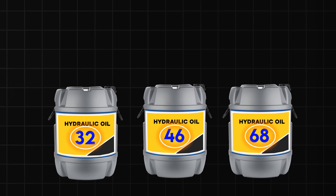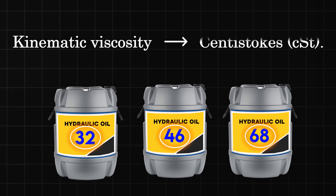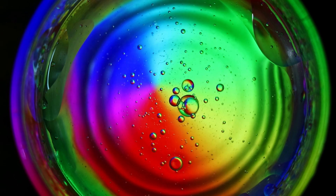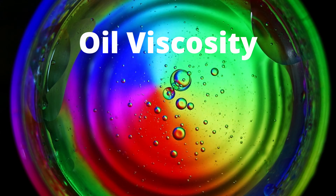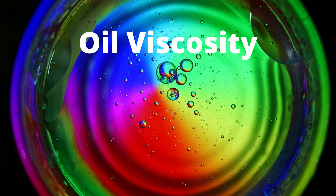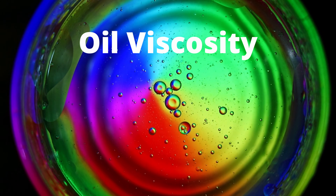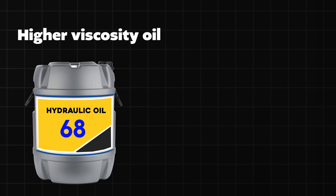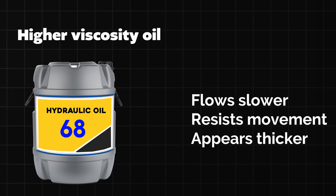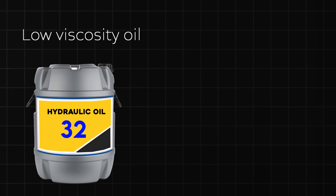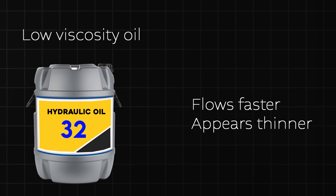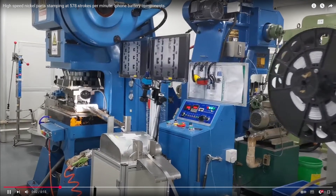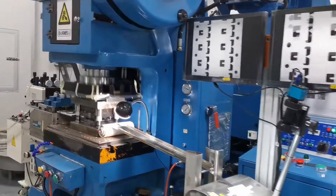These numbers represent the kinematic viscosity of oil in centistokes. Oil viscosity is a measure of how easily oil flows, or how much it resists flow. An oil with higher viscosity like oil 68 flows slower, resists movement, and appears thicker, whereas oil with lower viscosity like oil 32 flows easier, making it appear thinner. This is the one major factor in oil selection.